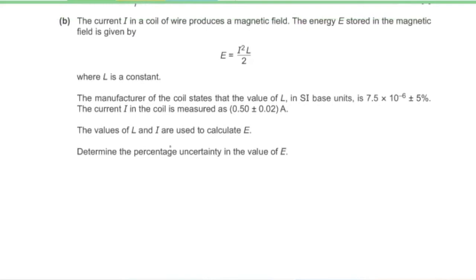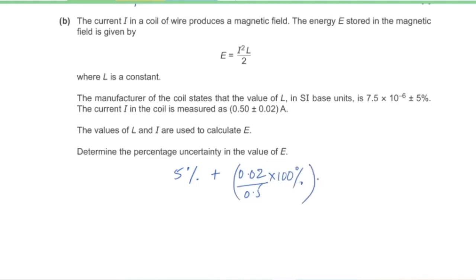Part B. The current in a coil of wire produces a magnetic field. The energy E stored is given by E = I²L/2, where L is a constant with value 7.5 × 10⁻⁶ and ±5% uncertainty. The current I is 0.5 amperes with absolute uncertainty 0.02 amperes. The percentage uncertainty in E is: 5% (from L) plus 2 × (0.02/0.5 × 100%) = 5% + 8% = 13%.